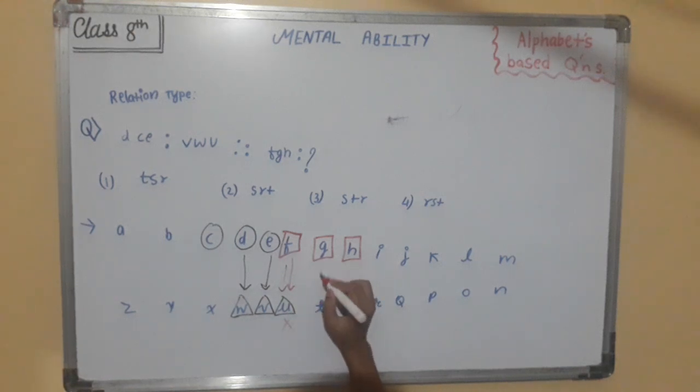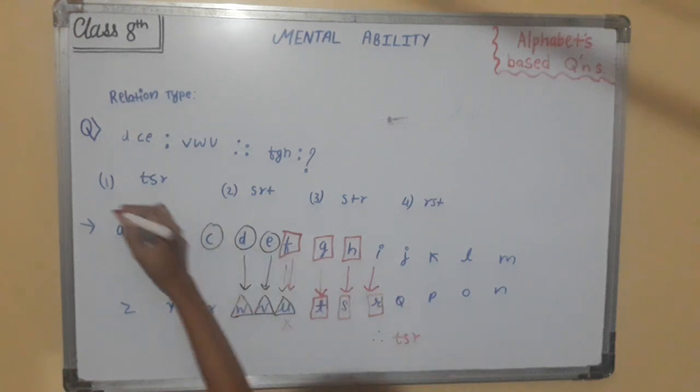So T, S, R. Therefore T, S, R is the correct option. Option number one is correct. I hope you have understood this.